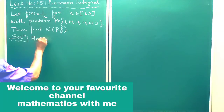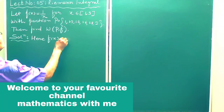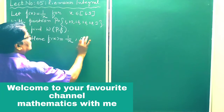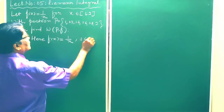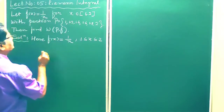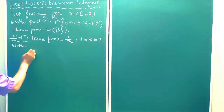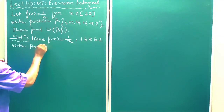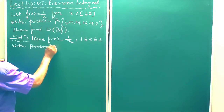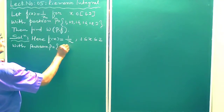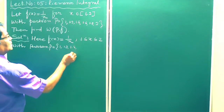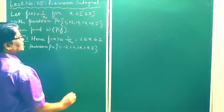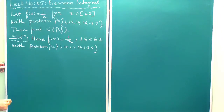Here f(x) = 1/x, and we are given 1 ≤ x ≤ 2, with partition P = {1, 1.2, 1.4, 1.6, 1.8, 2}. This is the partition given here.